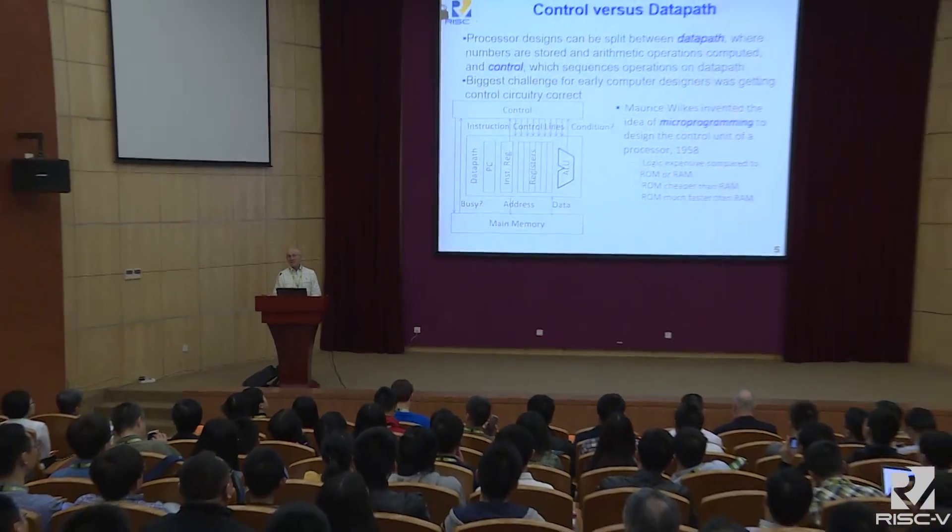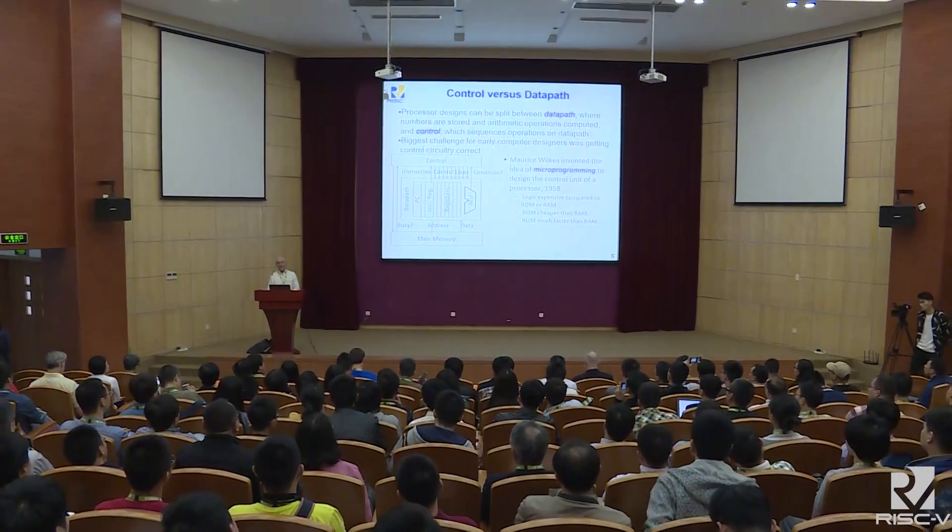At the time, logic was expensive compared to read-only memory, and ROM was cheaper and faster than read-write memory. Wilkes's idea was to specify processor control using read-only memory, treating it like programming — microprogramming. IBM's designers seized on this academic paper because they needed a way to build many different computers with the same instruction set. They bet the IBM 360 on this unproven academic idea of microprogramming.